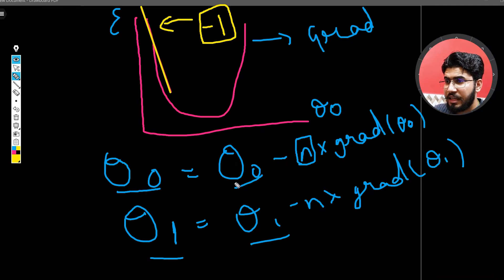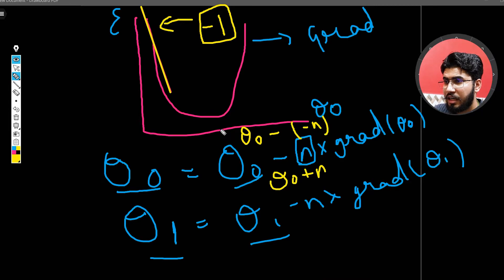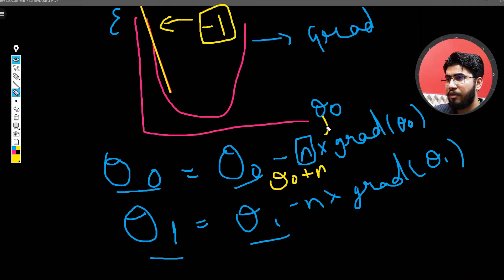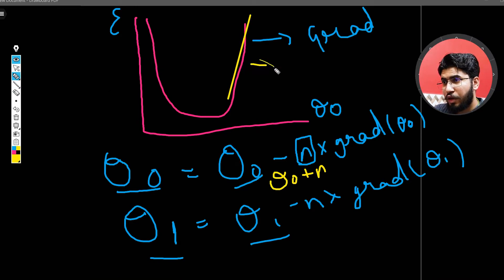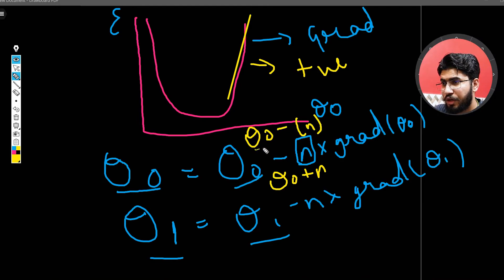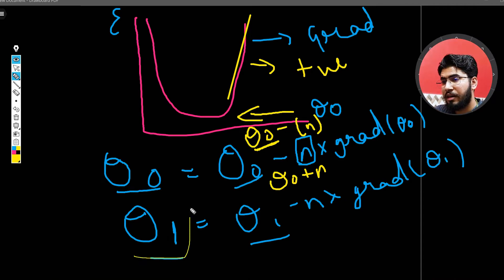When the gradient is negative, theta 0 minus n times a negative number becomes theta 0 plus n, which ultimately increases the value of theta 0. Now if the error starts from the right side of the curve, finding the slope there gives a positive number. So theta 0 minus n times a positive number decreases the value of theta 0, moving it towards the minimum. The same logic applies for theta 1 — that is how you update both thetas using the gradient of the error.